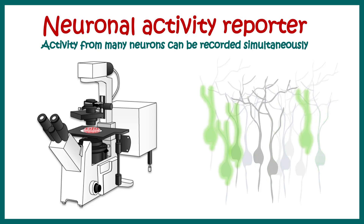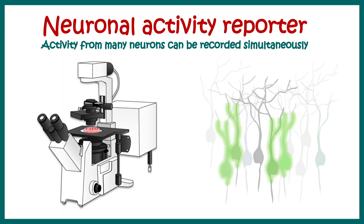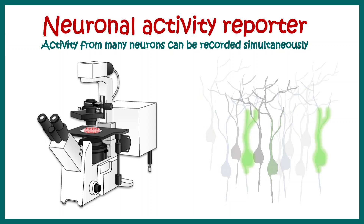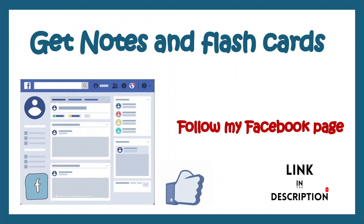There are also activity-based reporters. For example, when a neuron is active and firing, certain GFP-based reporters can report on calcium levels inside the neuron or voltage changes within it. If you want to learn more about these neuronal activity reporters, you can click the info button. Notes for this topic are also available on the Facebook page, the link for which is provided in the description.